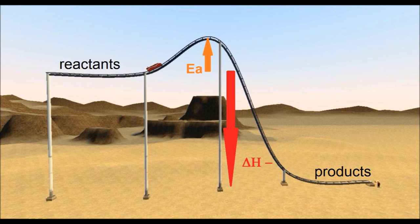Once again, the minimum energy required for a reaction to occur is labelled Ea, activation energy, but notice now the difference between the energy of the reactants and the products. That's going to be negative, so delta H is negative — we're going down all the way here. And so that means exothermic.